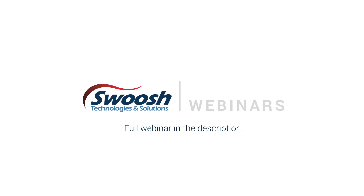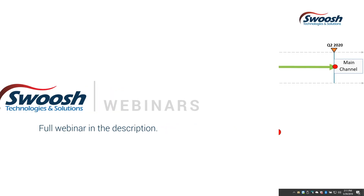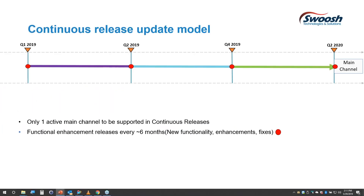Let me show you a timeline to clarify what I'm talking about with NX1847 versus NX1872, or even NX1863 which I have on my computer. The idea is to have major releases roughly every six months. If you've been around NX and Unigraphics back in the old days, major releases used to come out about every year. These functional enhancement releases are represented by the red dots on the timeline.